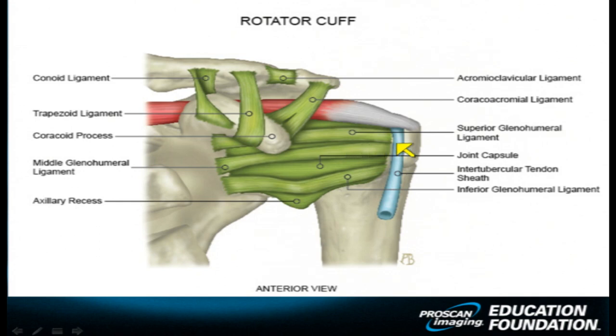We also have another component of the rotator cuff partially seen here, depicted in blue — the biceps tendon. It contributes somewhat to rotator cuff stability, especially as it enters the joint and travels back to the superior aspect of the glenoid. The joint capsule, along with the ligaments in front of it, also contributes to rotator cuff stabilization. The infraspinatus, teres minor, supraspinatus, coracohumeral ligament, biceps, and capsule are all contributors to the rotator cuff stabilization mechanism.